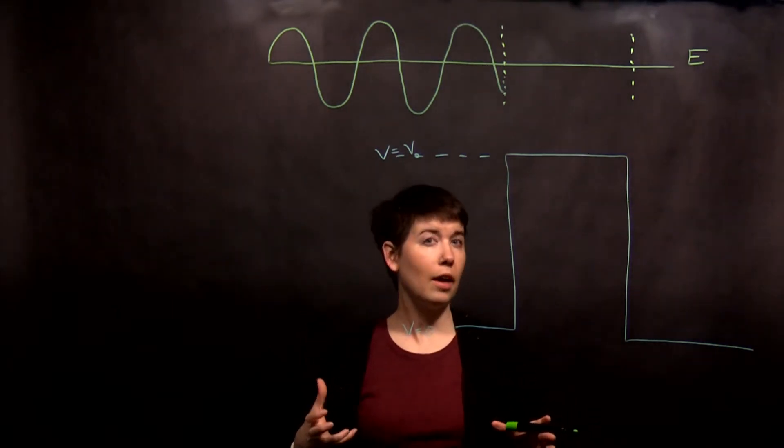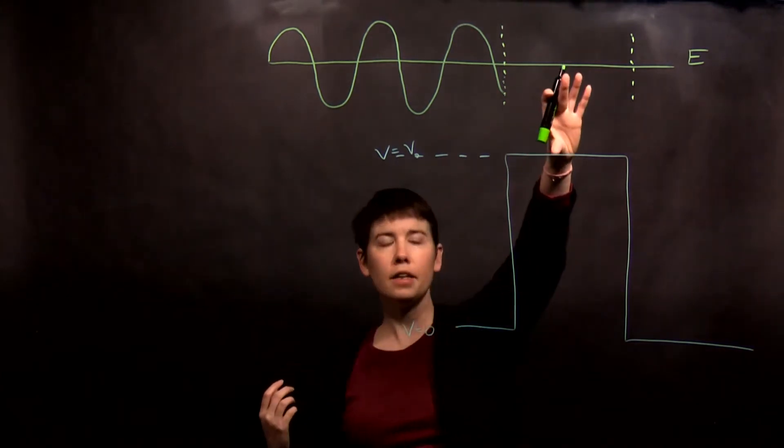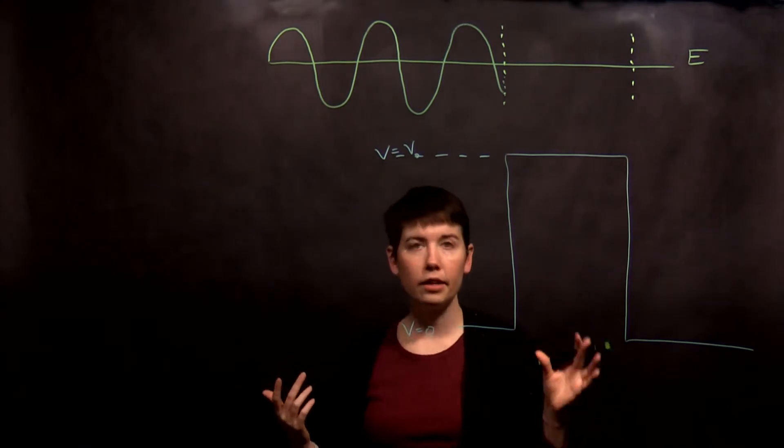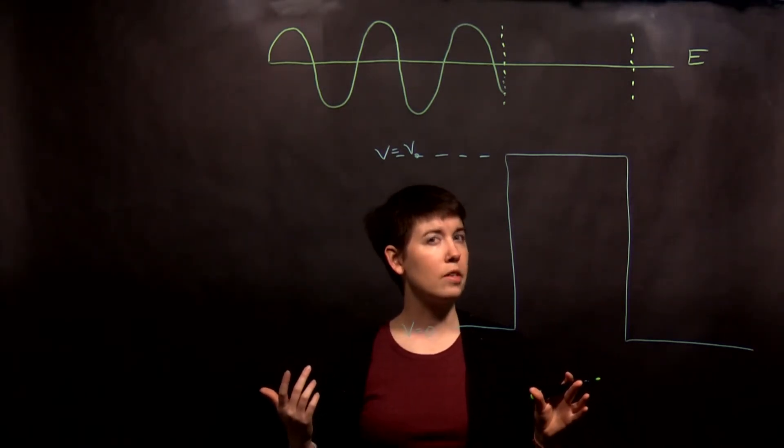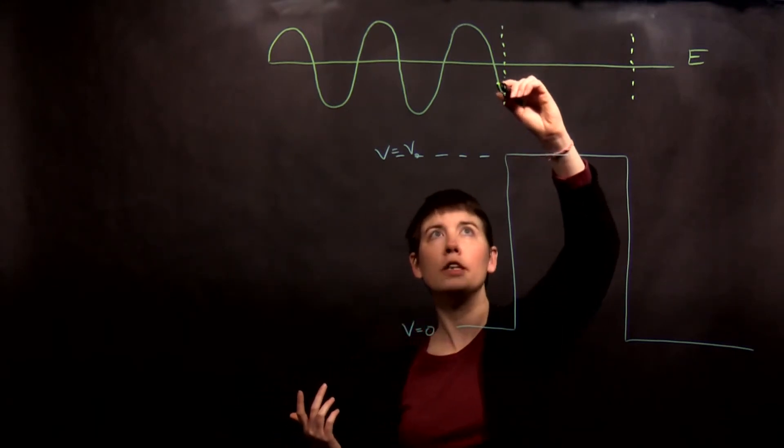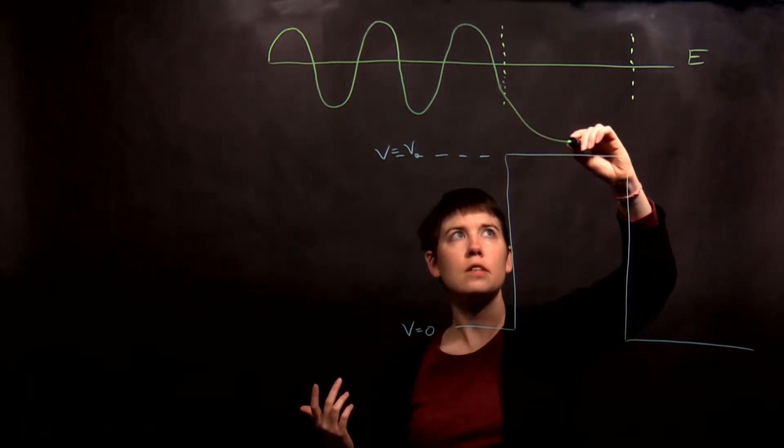This is where it's a little counter-intuitive. If your kinetic energy here, again, going back to a classical analog, if your kinetic energy here is smaller, well, then it's going slower and it spends more time here. So the wavelength needs to get longer and your amplitude needs to get bigger.